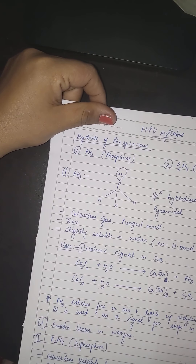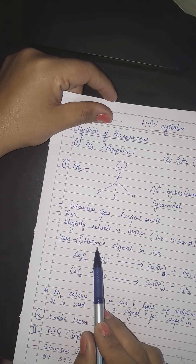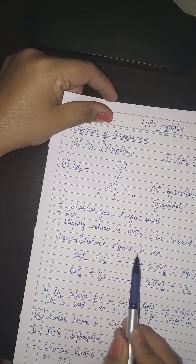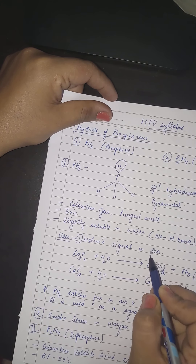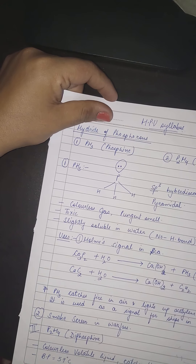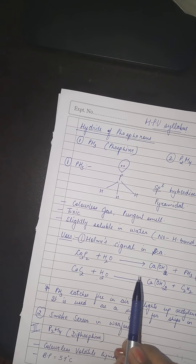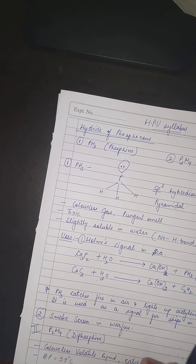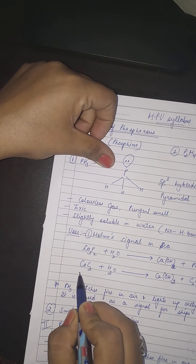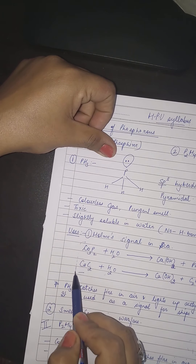Baaki synthesis aur chemical properties aap khud padhoge. Ek important use: PH₃ ko sea mein signal ke roop mein use kiya jaata hai. Samudr mein jab jahaaz chalte hain aur aage koi chattan ya danger ho, uske liye yeh signal deta hai — ise Holmes signal kehte hain.